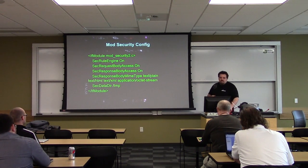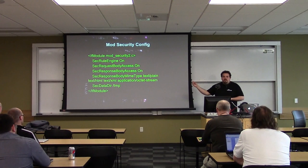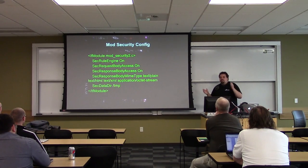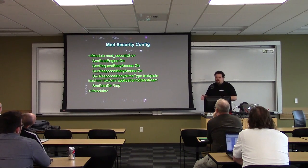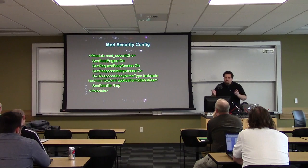We tell mod_security to look at the request body and the response body — traffic coming in and going out. You can write rules saying this data looks like a social security number, don't send that out. Or this looks like credit card data — flag it and log a warning.